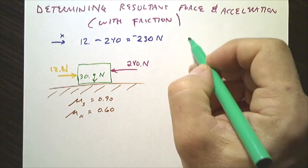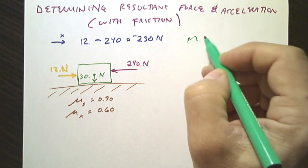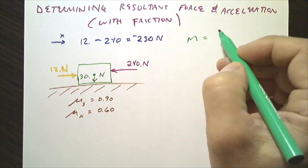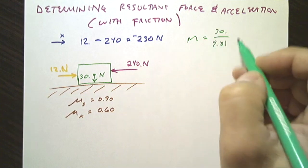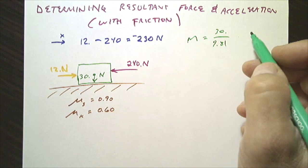We'll also determine the mass of the object, which would be the force due to gravity, which is 30, divided by 9.81 acceleration due to gravity on Earth. And that gives us 3.1 kilograms.